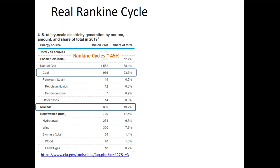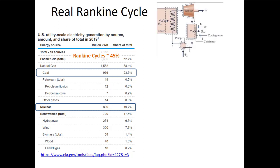Lately we've been talking about Rankine cycles, which are important here in the United States. Maybe not as important as a decade or two ago when they were potentially producing 80% of the total power in the US, but we still get about 45% of our electrical power from coal and nuclear power plants. So this is still a very important way of getting energy in the United States.